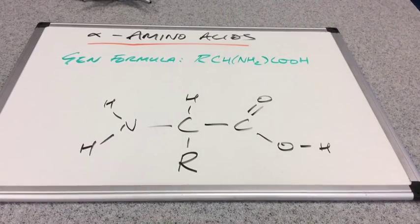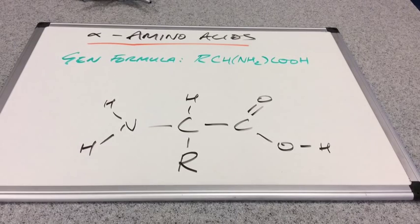And you can see there, I've written up in green, the general formula of an alpha amino acid, RCHNH2COOH.